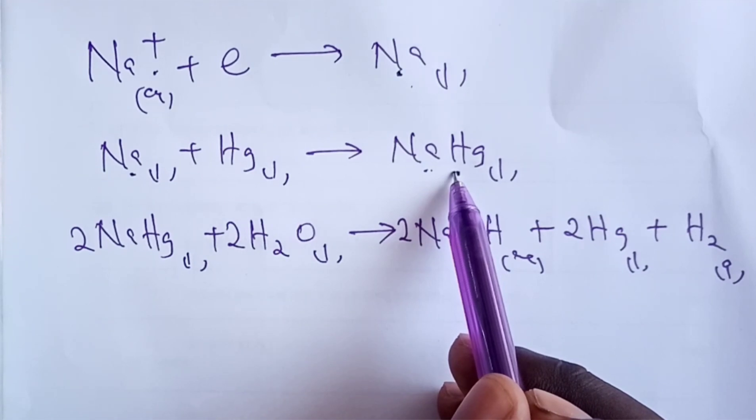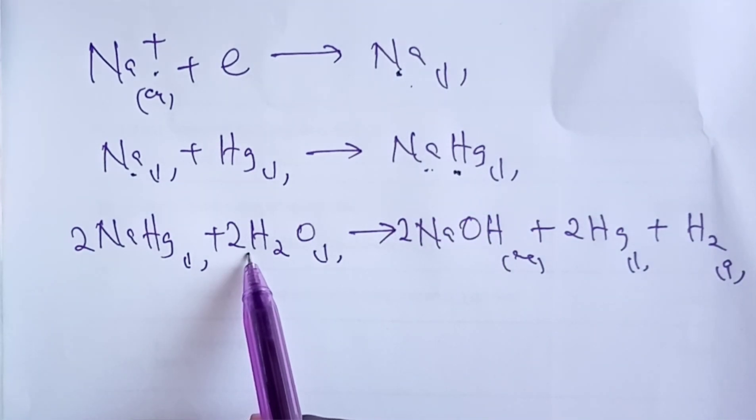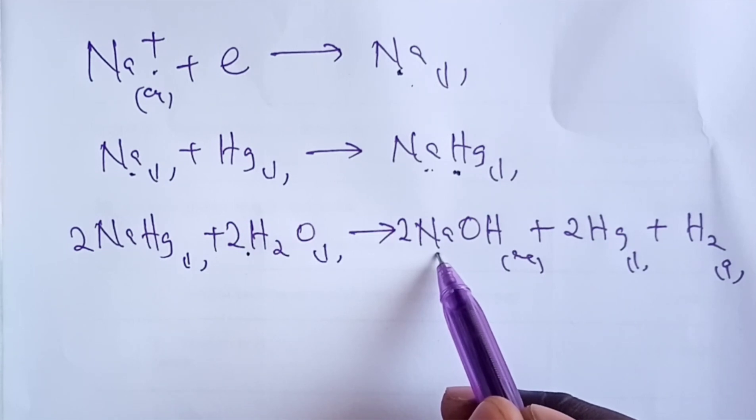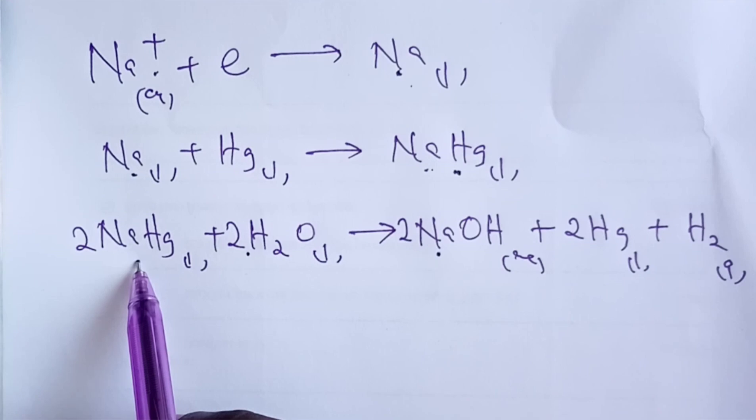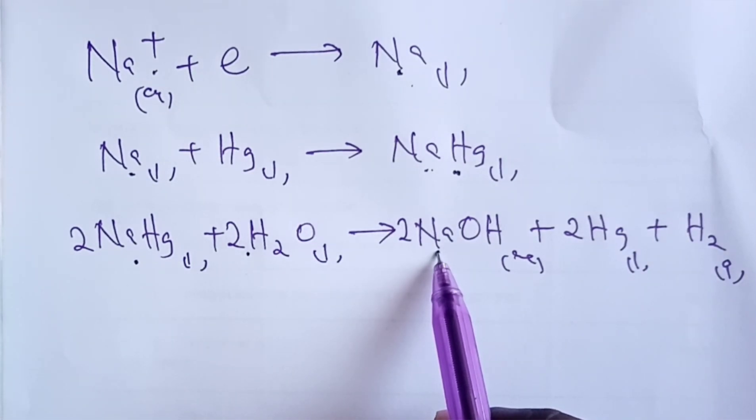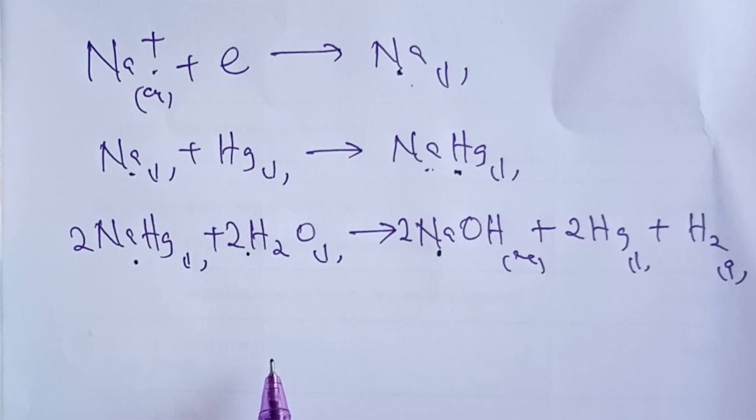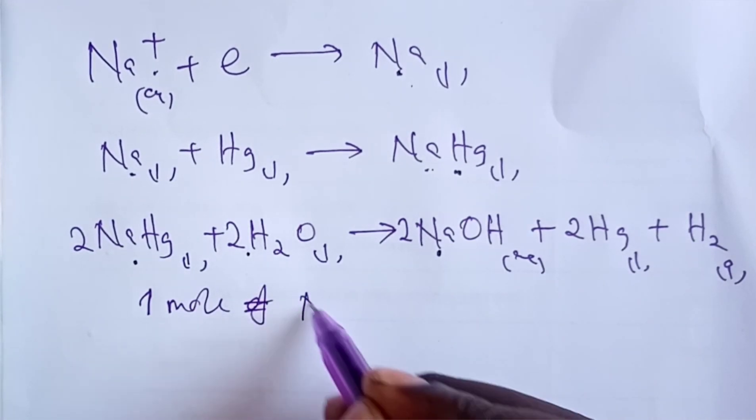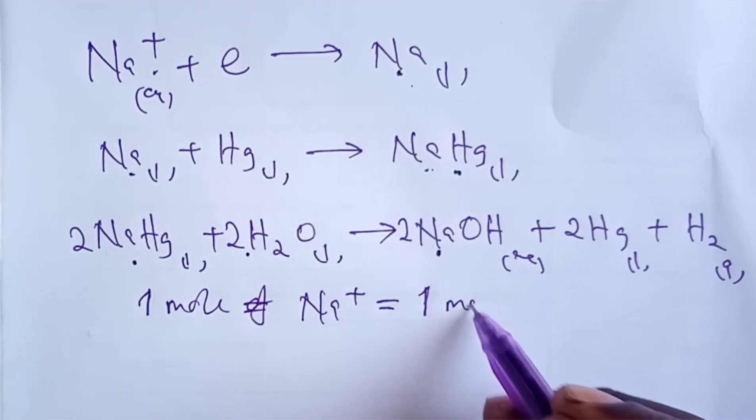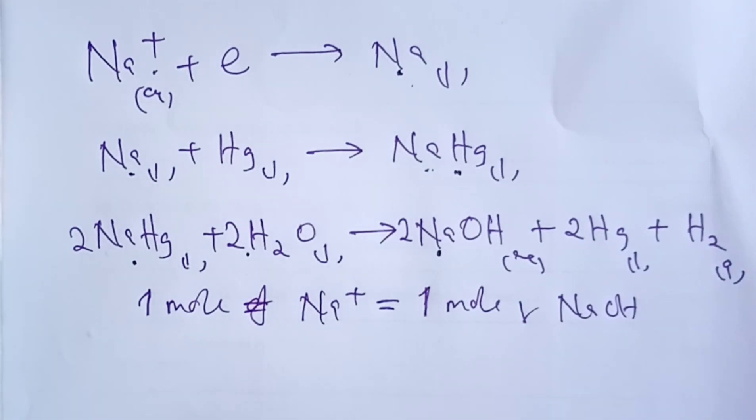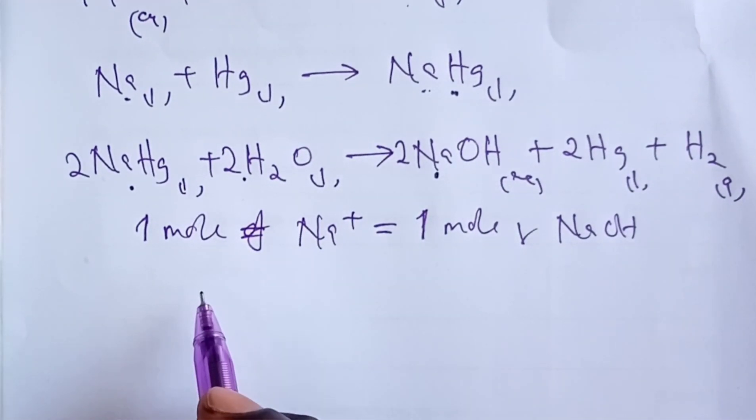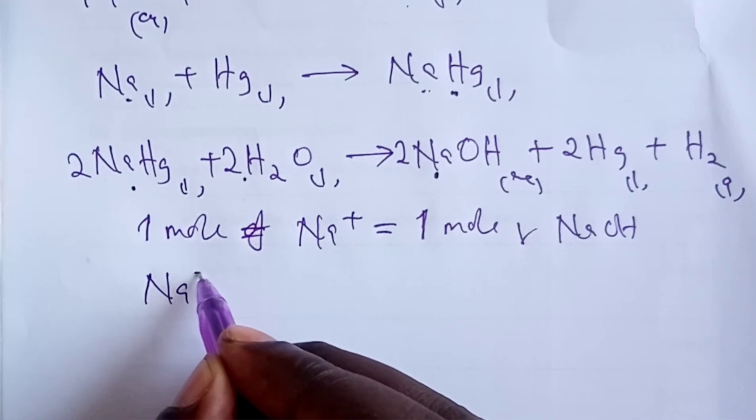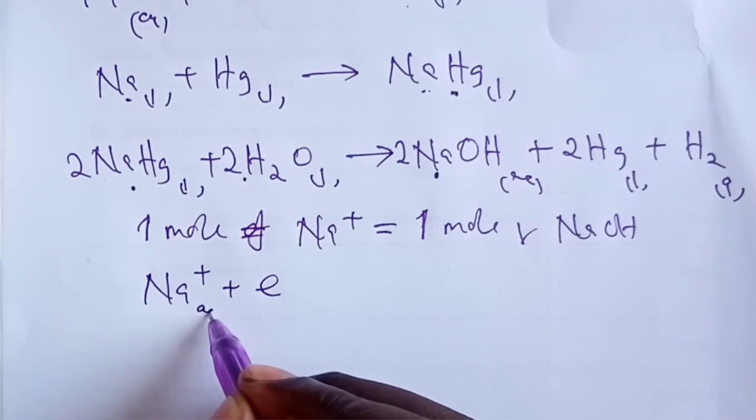The moment we have formed the sodium mercury amalgam, we shall react with water to get sodium hydroxide. Here, one mole of sodium mercury amalgam is giving us one mole of sodium hydroxide, since the mole ratio is one to one. The overall conclusion is that one mole of sodium ions is actually able to give us finally one mole of sodium hydroxide.